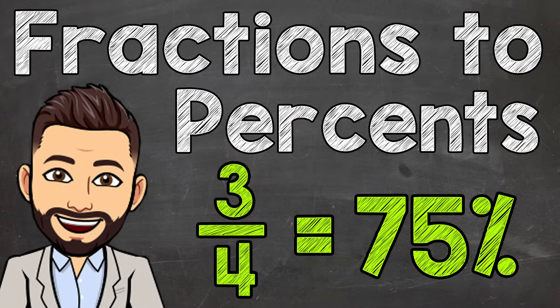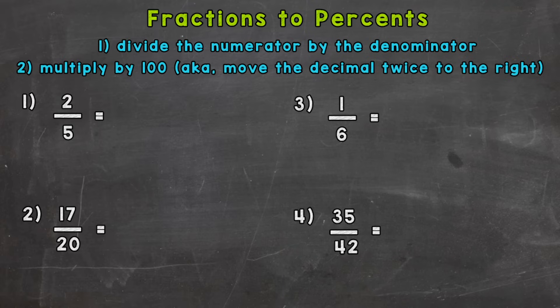Welcome to Math with Mr. J. In this video we're going to go from fractions to percents, and at the top of your screen in blue we have the steps we're going to use in order to do so. We're going to divide the numerator by the denominator and then multiply that answer by 100, and we do that by moving the decimal twice to the right. So we have four examples that we're going to go through together.